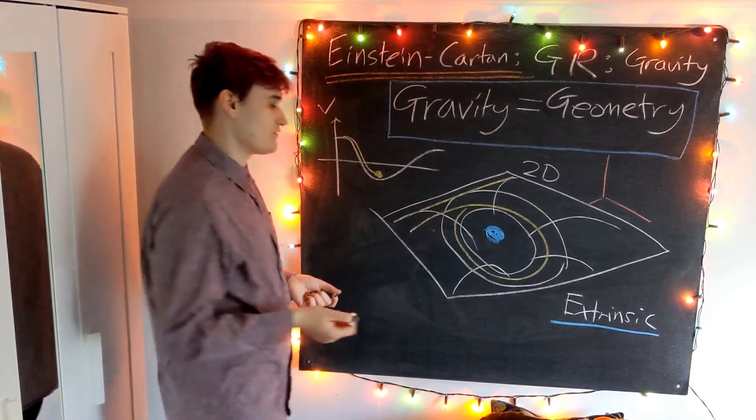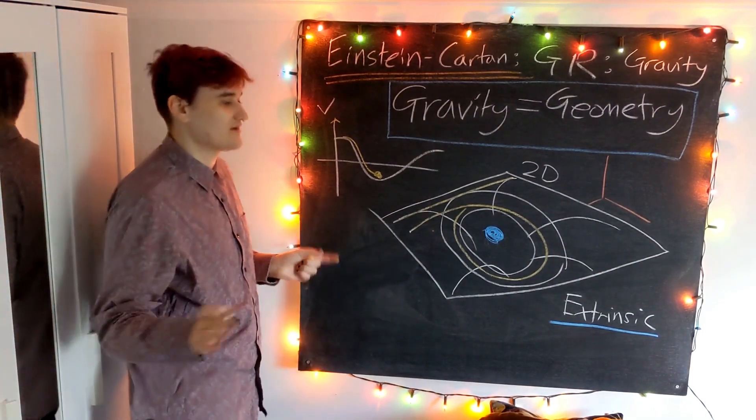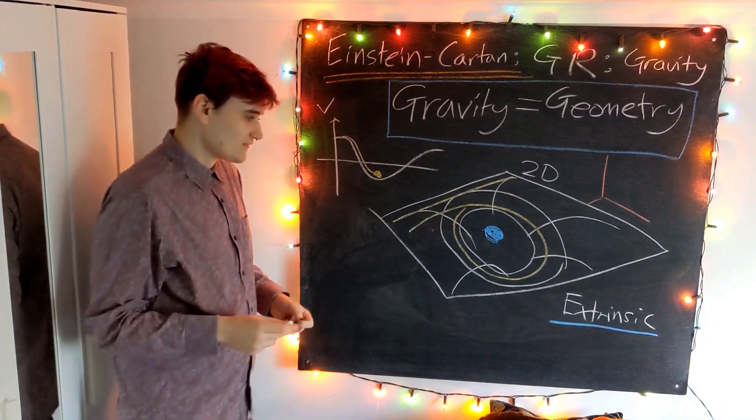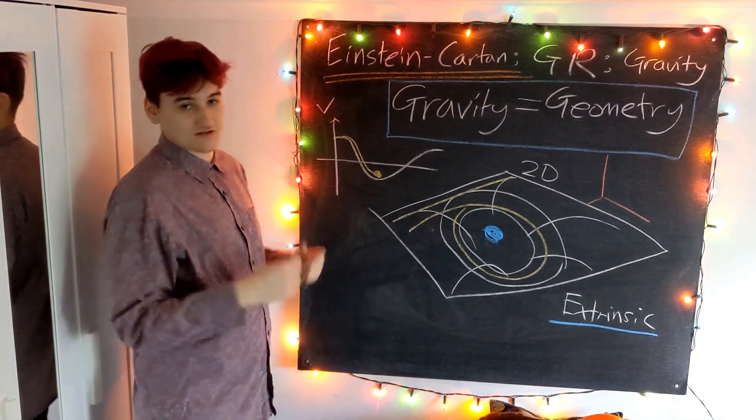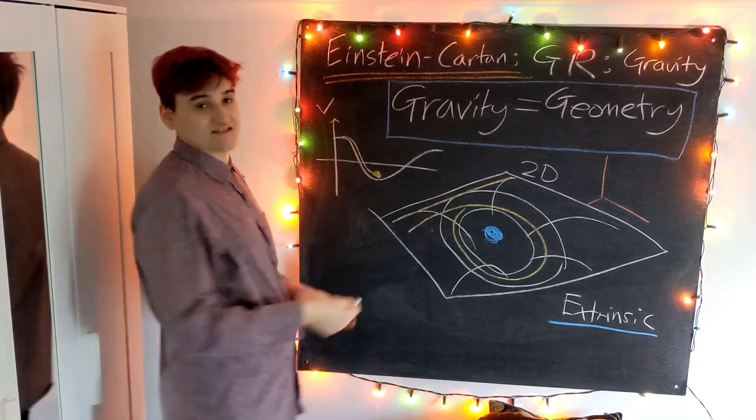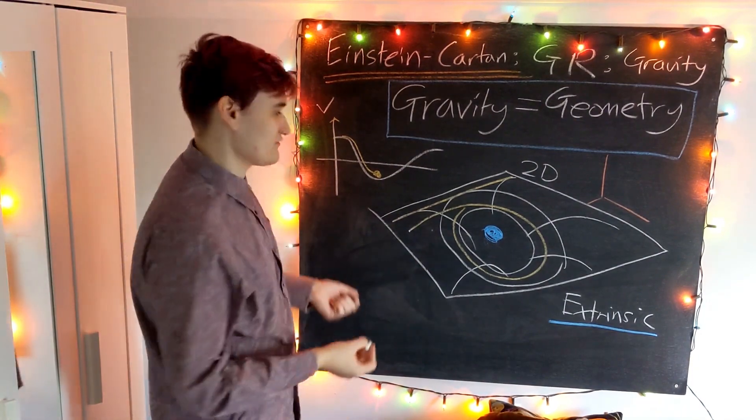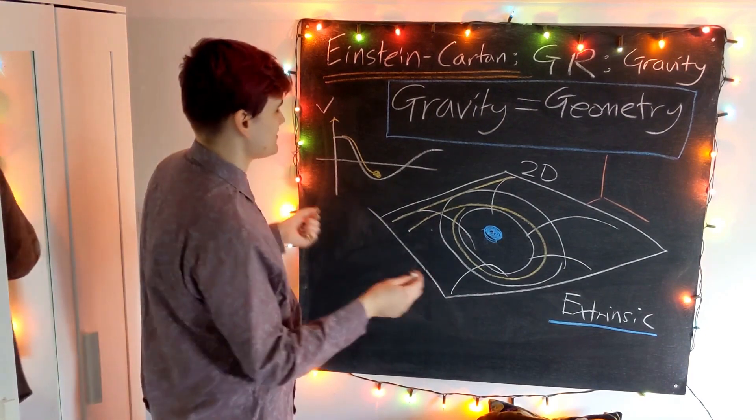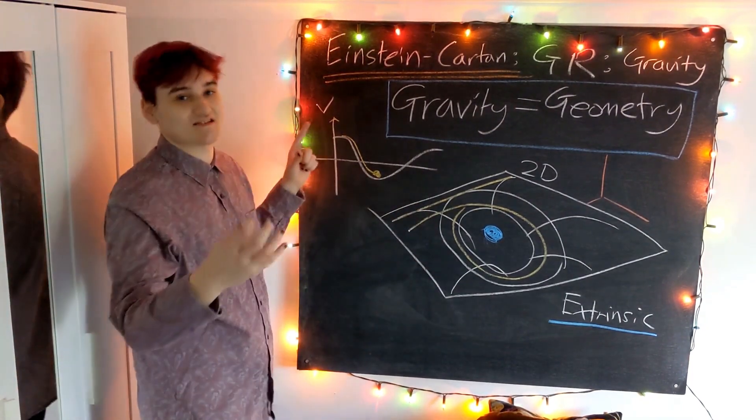But it really misses all of the more subtle details which are captured by the curvature of the actual geometry. The way that this analogy fails is that it's talking about the wrong kind of curvature. It's talking about this extrinsic curvature, which is curvature that we can only see because the spacetime lives in some higher, bigger spacetime dimension.